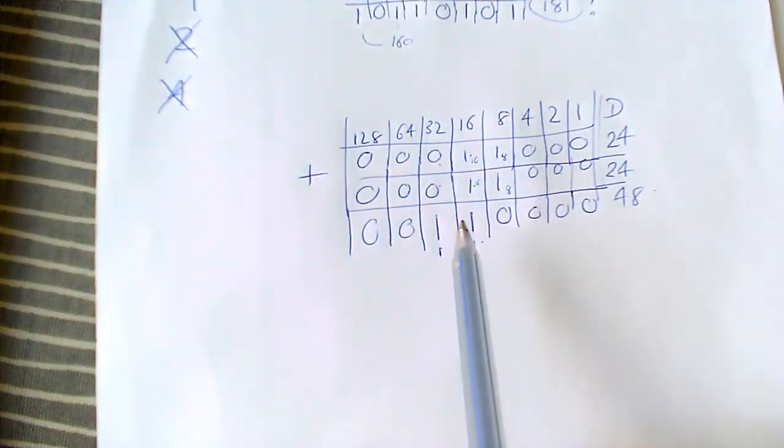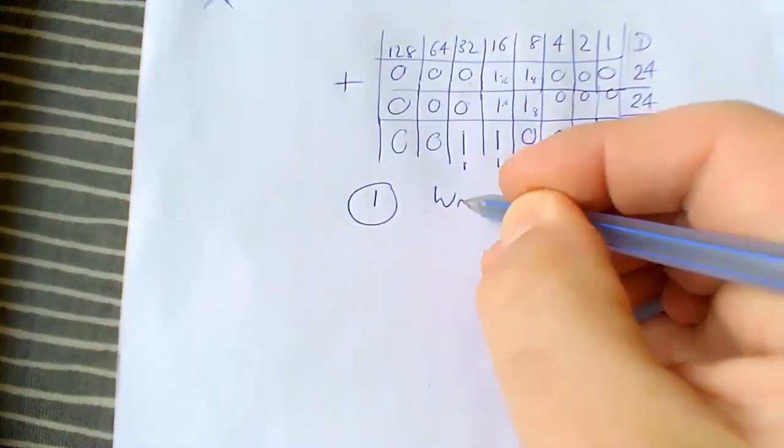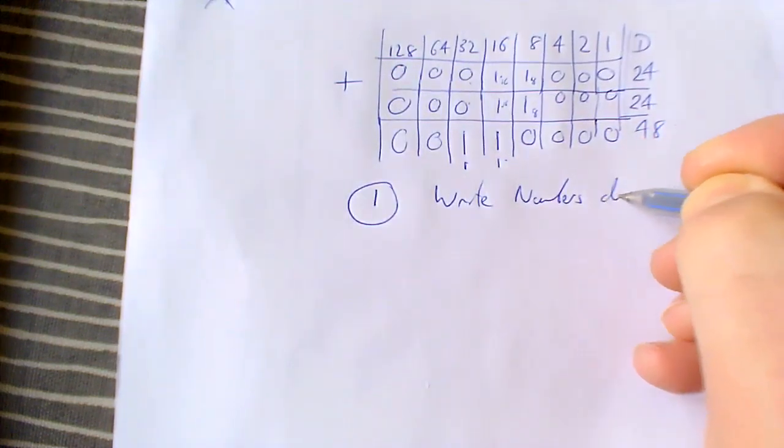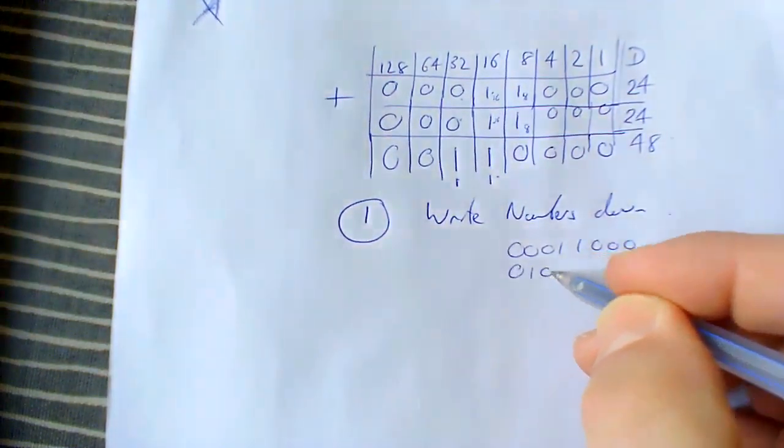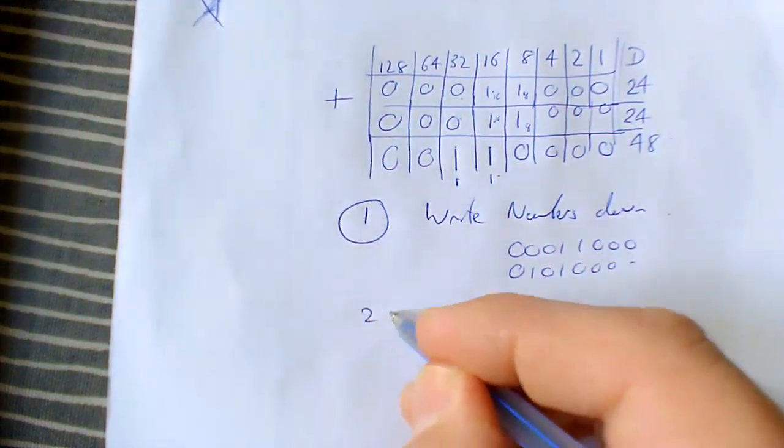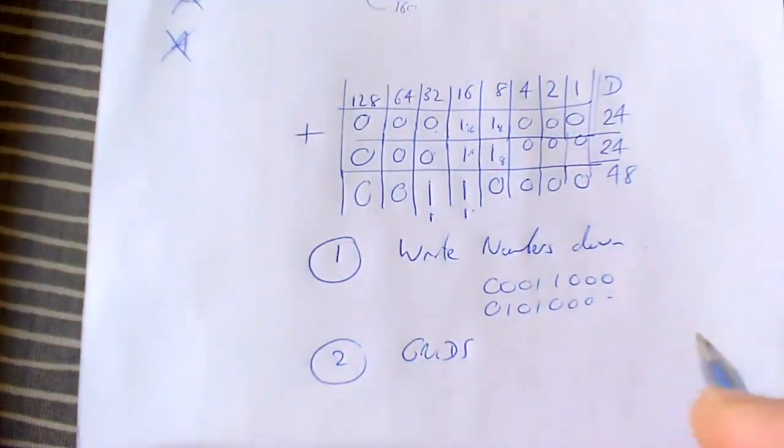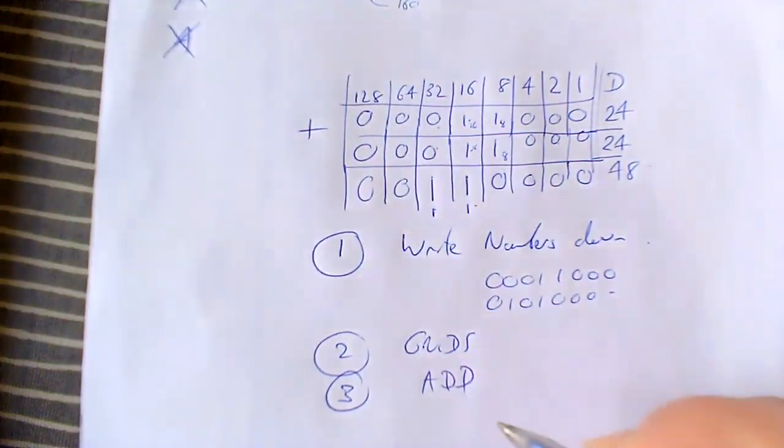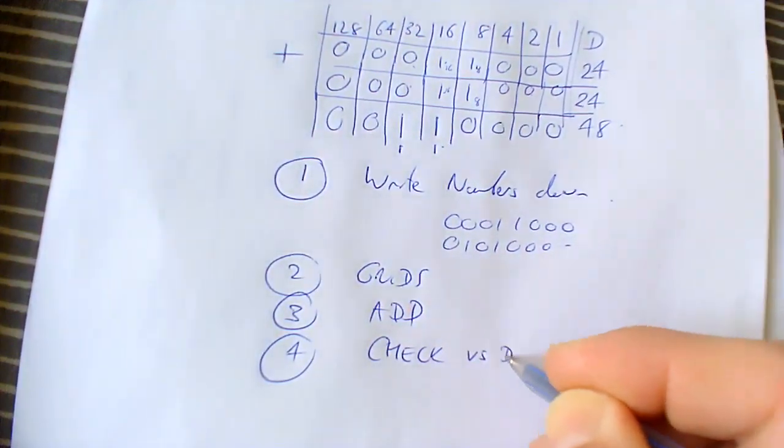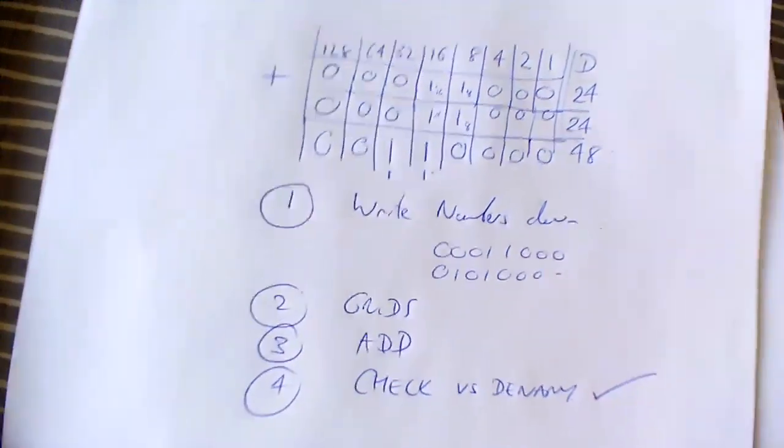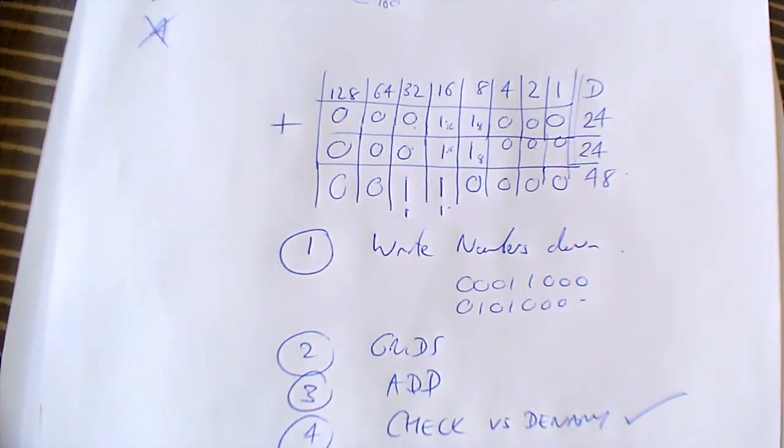So that's quite a tricky one. When you get the quiz questions in Edmodo, first thing to do: number one, write the numbers down on a piece of paper. Then two, grids on them like these ones here, and then start adding in the columns. Three, add using the techniques I've shown you. And then four is check versus denary. So just add it up in denary and see if you've got the right mark. So hopefully you'll get all of these correct. So thanks for watching and good luck.